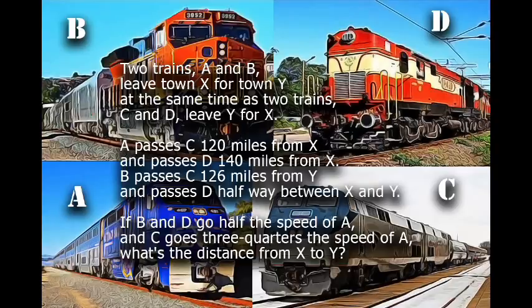A passes C 120 miles from X, and passes D 140 miles from X. B passes C 126 miles from Y, and passes D halfway between X and Y.